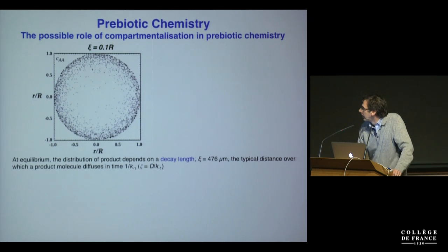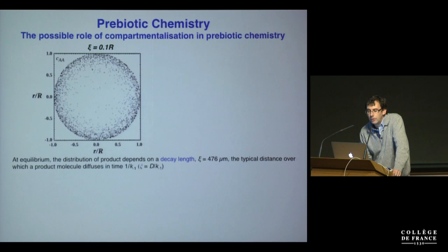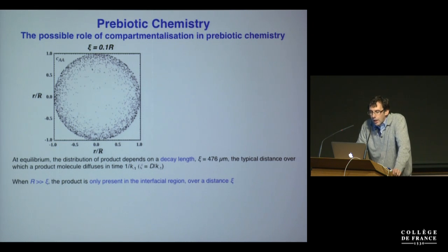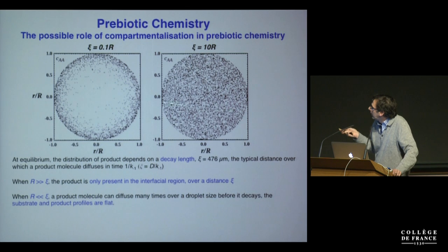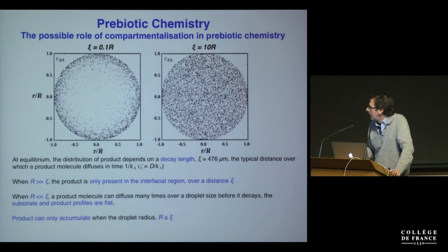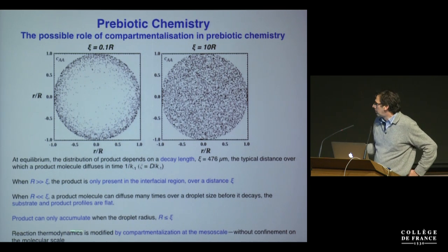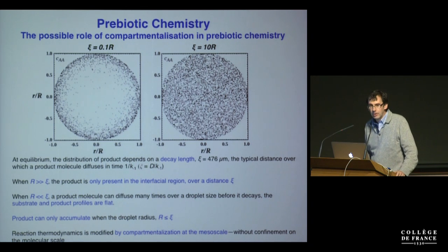This is a universal mechanism that can improve any unfavorable synthetic reaction when reactants have low affinity for the interface. From the theoretical analysis, at equilibrium the distribution of product in the drop depends on the decay length psi, which in this case is about 500 microns — the typical distance a product molecule diffuses in a time 1/K-minus-1. When R is much greater than psi, the product is only present in the interfacial region. When R is much less than psi, the product can diffuse many times the droplet size before it decays, so product can only accumulate when the droplet radius is less than psi. This is a quite interesting phenomenon where reaction thermodynamics is modified by compartmentalization at the mesoscale — there is no confinement at the molecular scale.